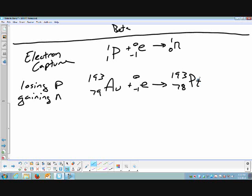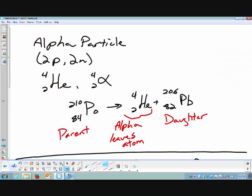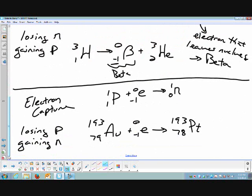On the stability band, if we have an isotope down below the stability band, we can become more stable by either gaining neutrons or losing protons. And this is part of the electron capture scenario. So electron capture occurs below the stability band.